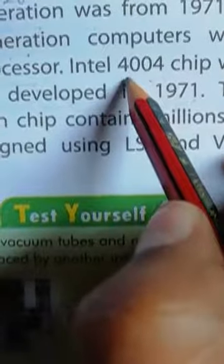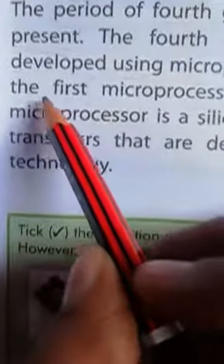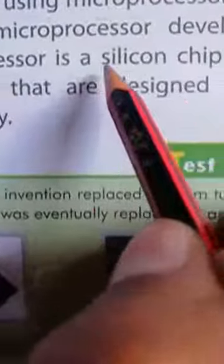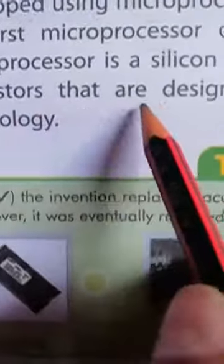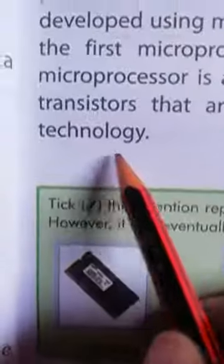Intel 4004 chip 1971 में विकसित किया गया था. The microprocessor is a silicon chip. Microprocessor एक silicon chip है.